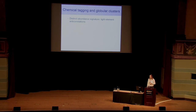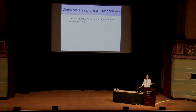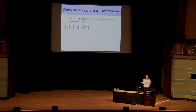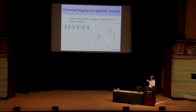The distinct abundance signature we can use to tag stars back to clusters is the very unusual behavior in light element abundances in globular clusters. In globular clusters, about two-thirds of stars show a pattern where carbon, oxygen, and magnesium are depleted, while nitrogen, sodium, and aluminium are enriched. This is something we see in every cluster but not in other components of the Milky Way, so it serves as a signifier that a star formed in a globular cluster.